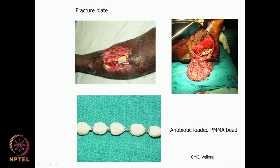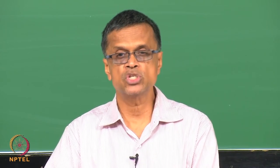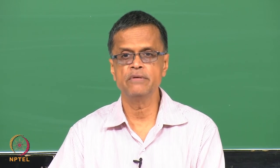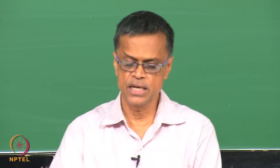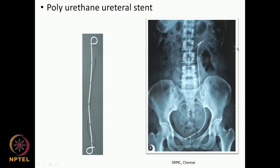The stainless steel rod is a biomaterial and the polymethyl methacrylate beads are also a biomaterial. When designing these, we need to consider all aspects: biocompatibility, host response, local response, and systemic response. Another biomaterial example is a polyurethane ureteral stent — made up of polyurethane, which is almost like rubber and very flexible.